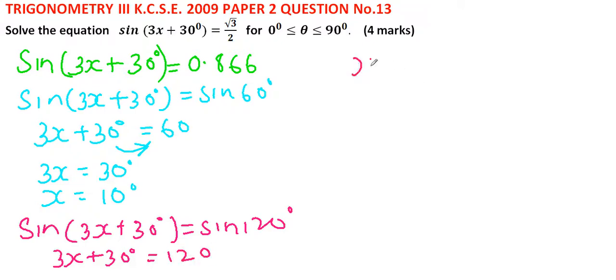We take 30 to the other side, that gives us 90. 90 divided by 3 gives x = 30°.